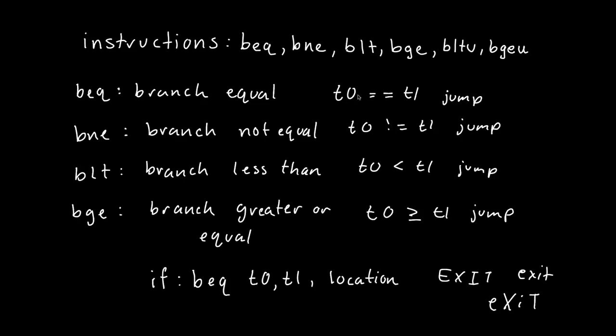Now, you might be wondering, well, what if we want to do something like branch less than or equal to. Or just branch greater than. And those are valid concerns. However, RISC does not include all possible branching instructions for a reason.